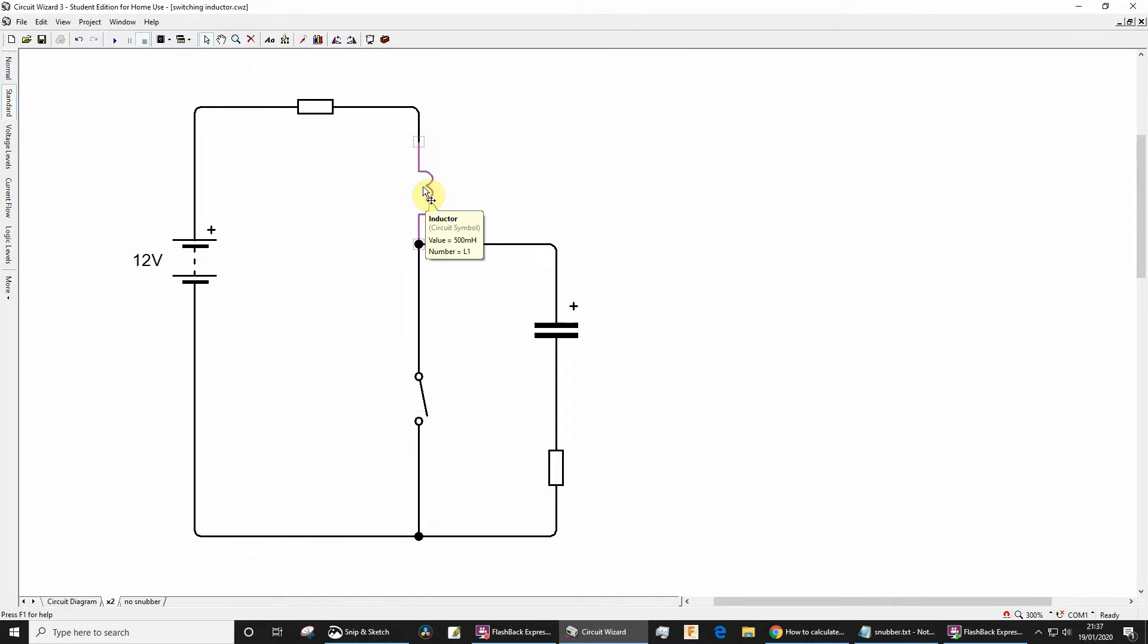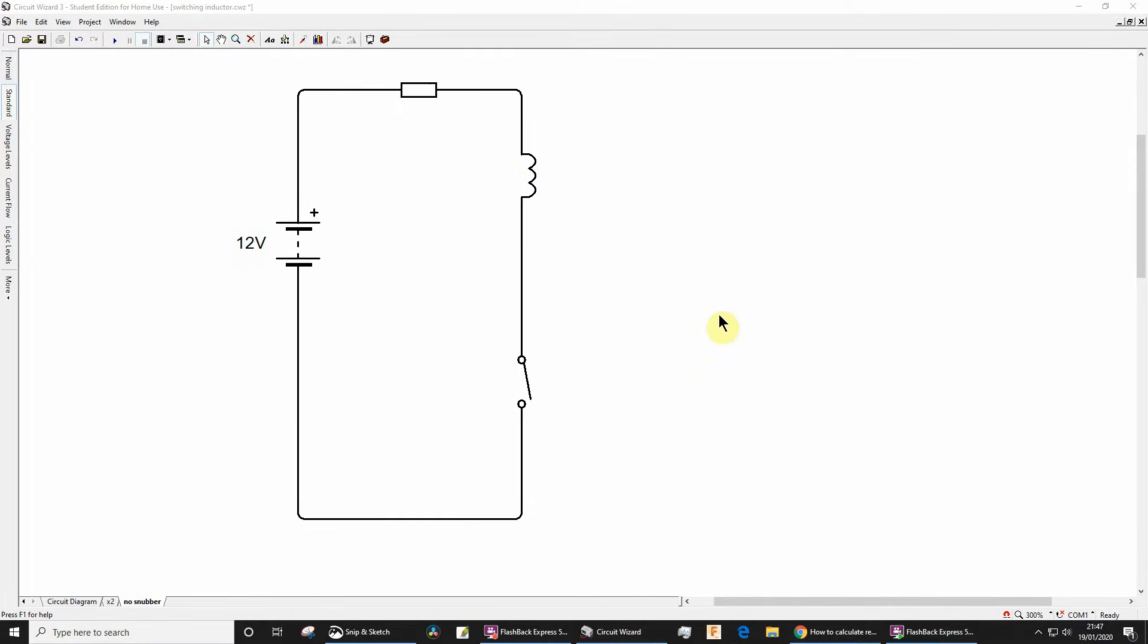Later in the video I will show you how we can calculate appropriate values for the snubber resistor and capacitor. Let's first look at this basic circuit that contains a switch with no snubber protection. The circuit includes a voltage source in the form of this battery, a coil, and a resistor to limit the DC current flowing through the coil.